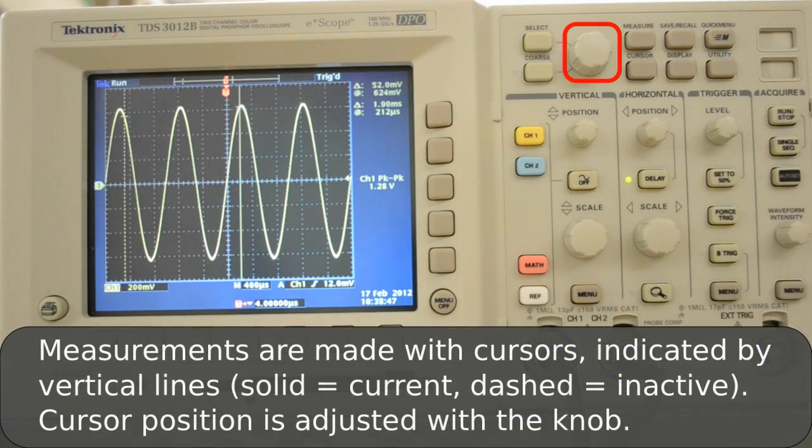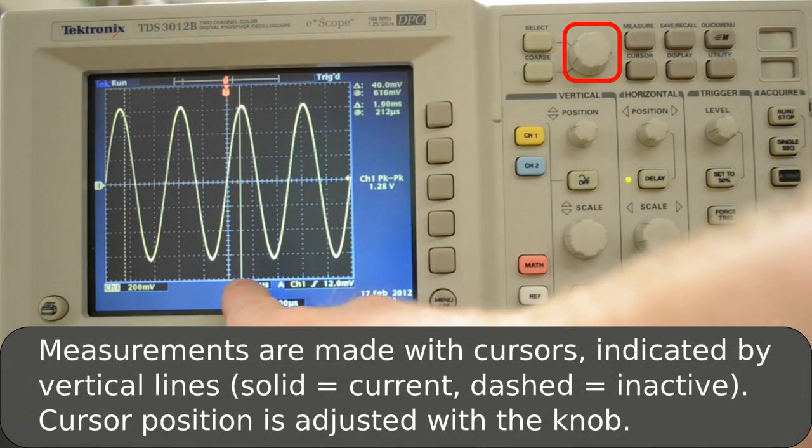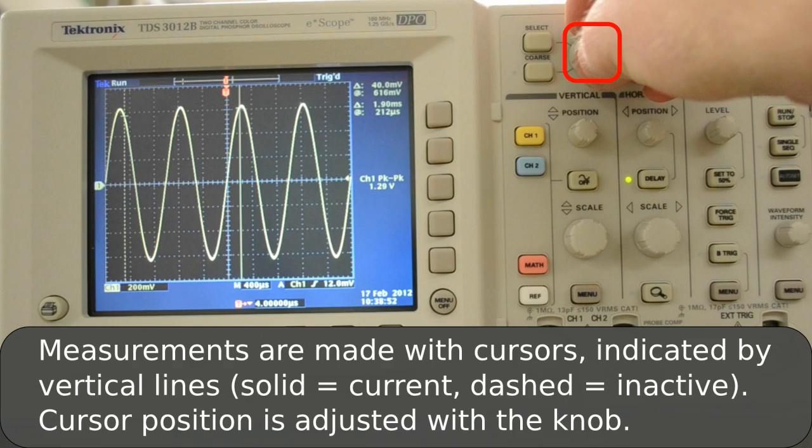So to measure, I can use the cursor, which is indicated by this vertical line, this yellow vertical line. I'll adjust it and put it right at the peak of that signal.